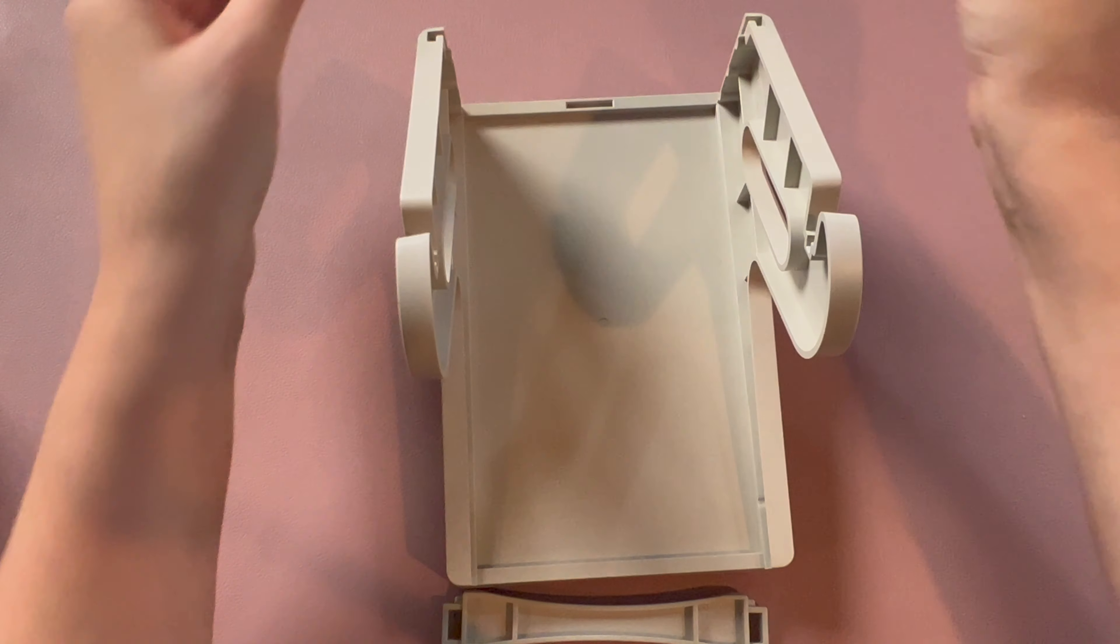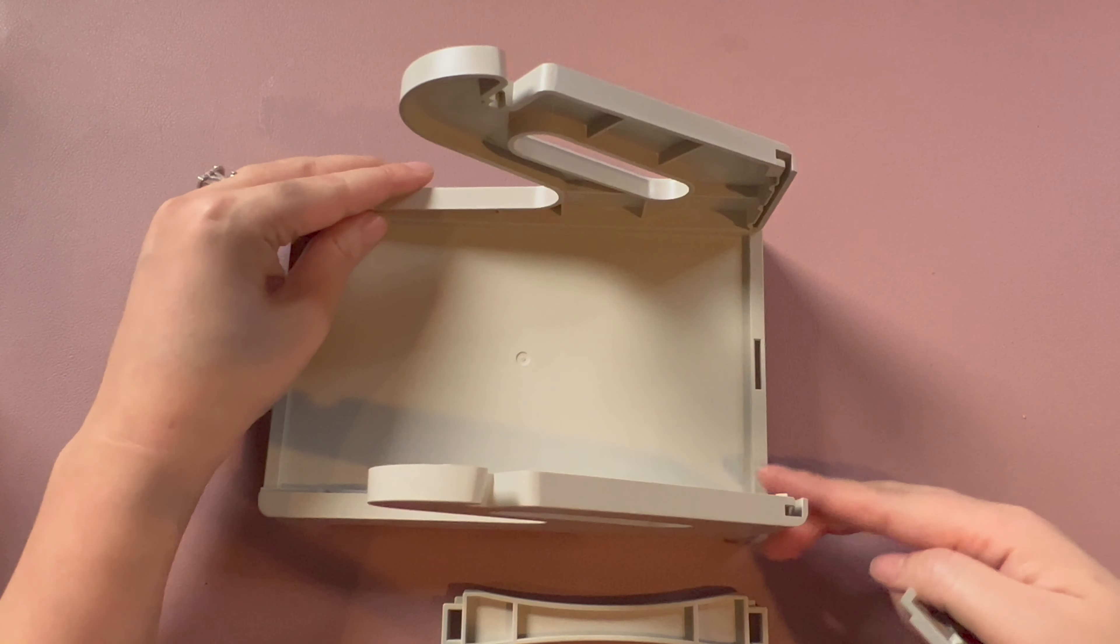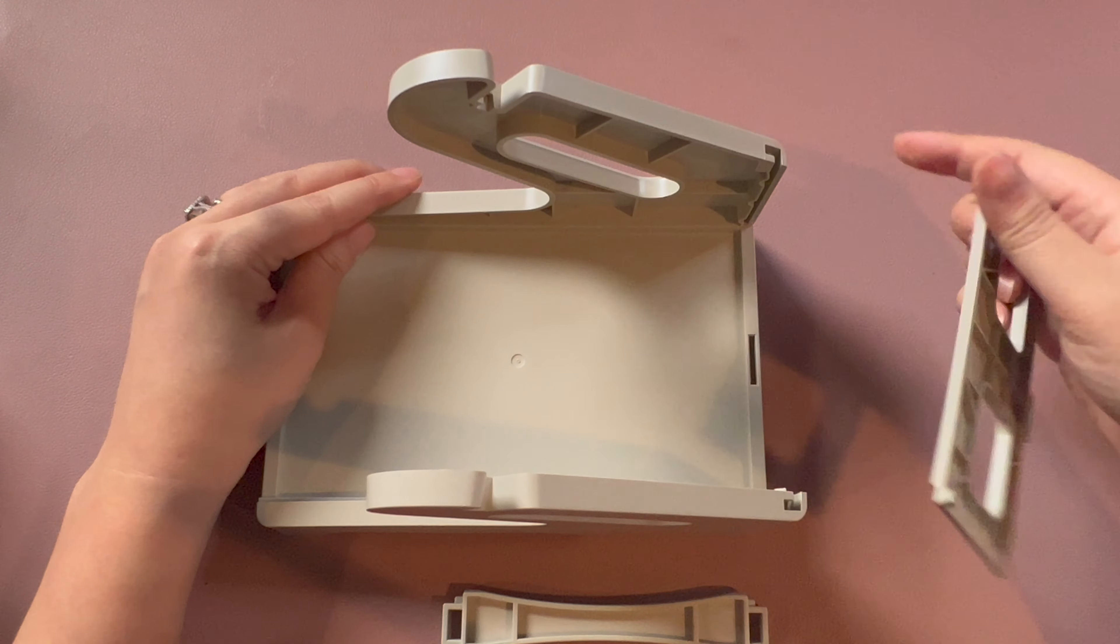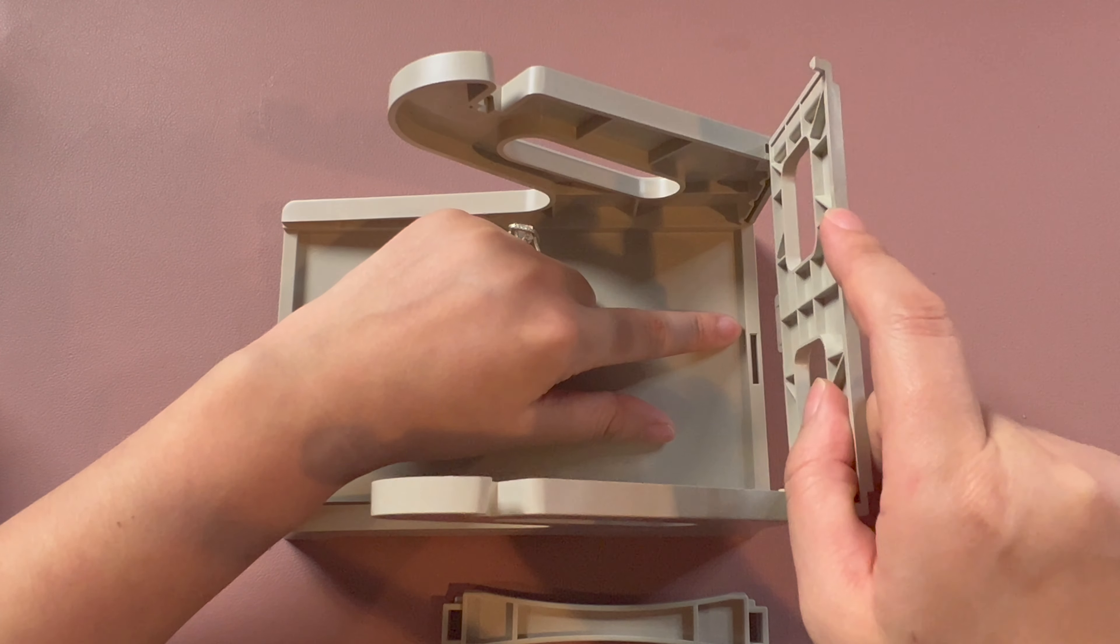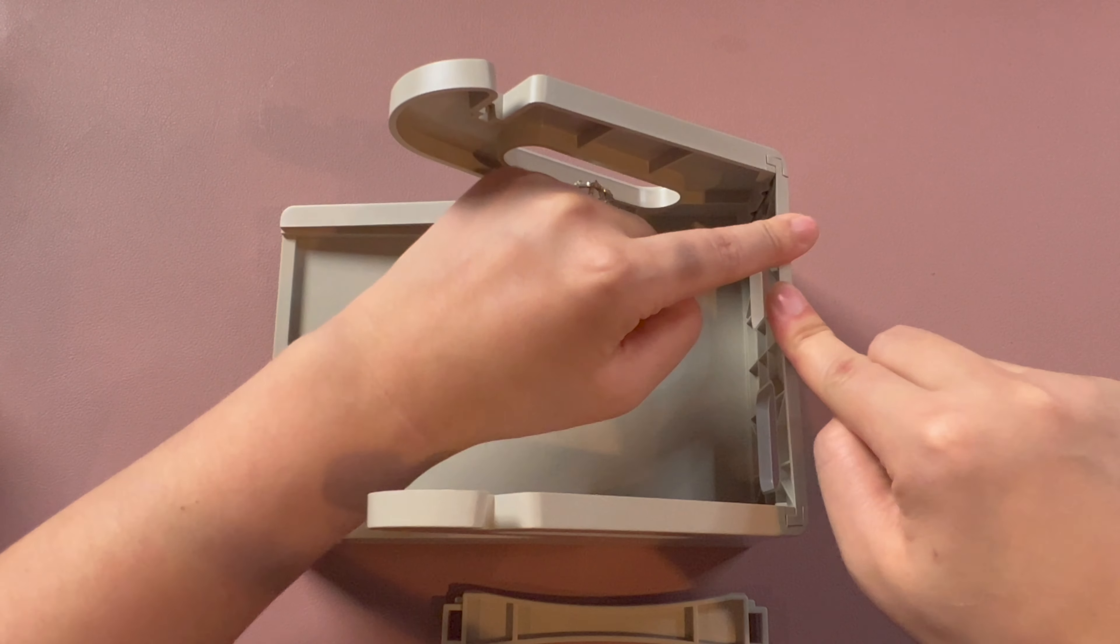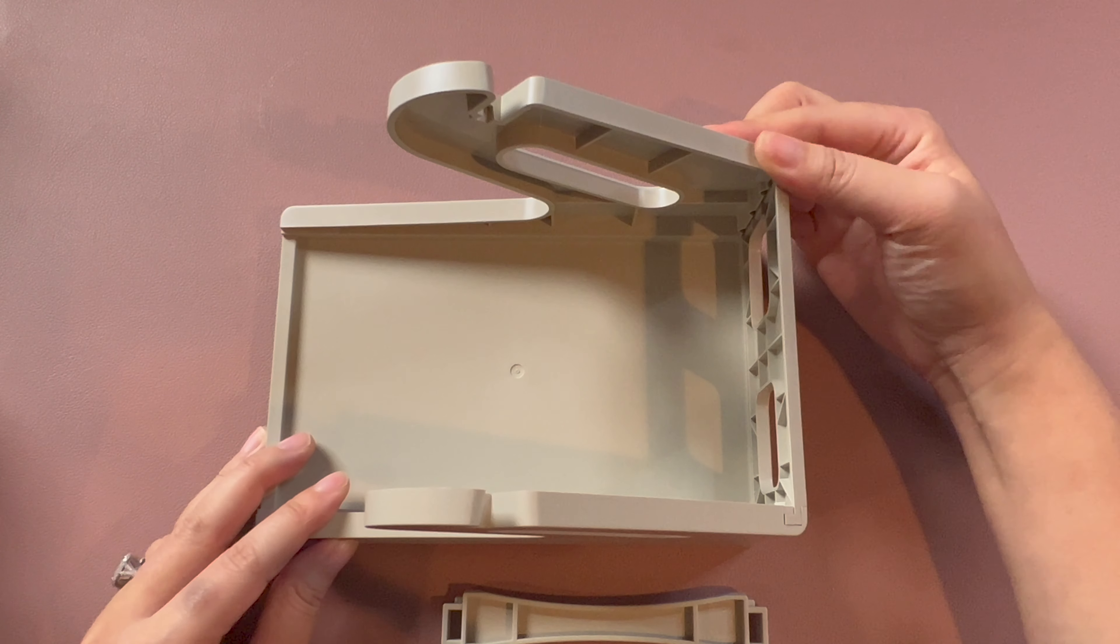You're going to take this back piece right here and you're going to see that it actually has the ability to slide down into this area and then there's a hook in the bottom for this piece as well. Make sure you slide it all the way down and you'll know that it's tight because these little hooks should be flush.